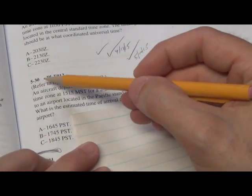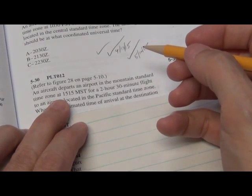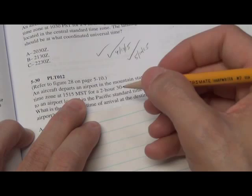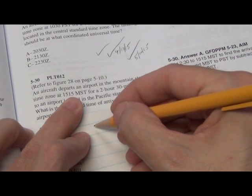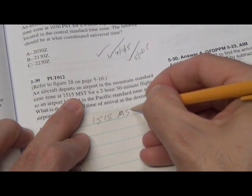Okay. Final question, 5-30 on page 511. An aircraft departs an airport in the Mountain Standard Time zone at 1515 Mountain Standard Time. So what do we do? You know it. You write down 1515 Mountain Standard Time.